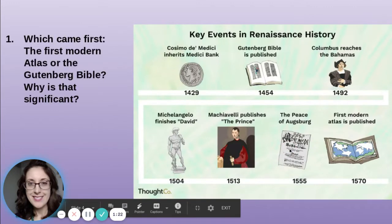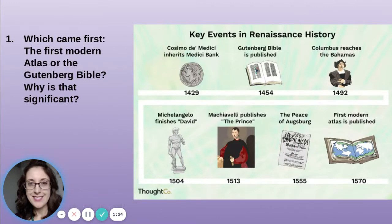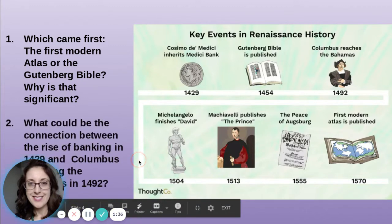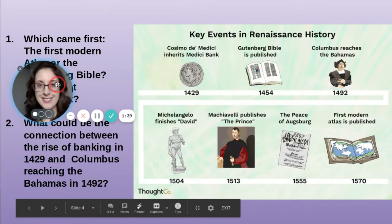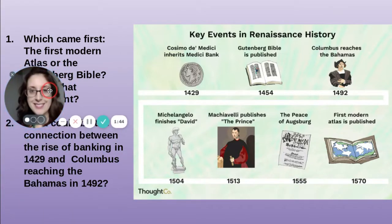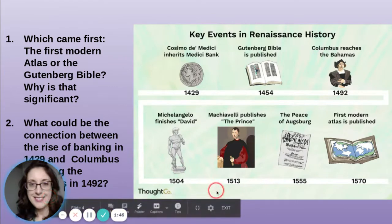We started out with some timeline questions: Which came first — the modern atlas or the Gutenberg Bible — and why could that possibly be significant? What could have been the connection between the rise of banking in 1429 and Columbus reaching the Bahamas in 1492?